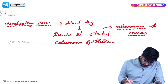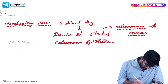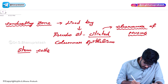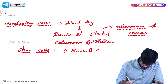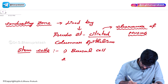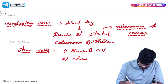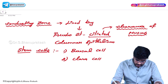Now, in the conducting zone, there are two important cells which are acting as stem cells. The first cell is called the basal cell and the second cell is called the Clara cell. So, basal cell and Clara cell are the stem cells in the conducting zone.